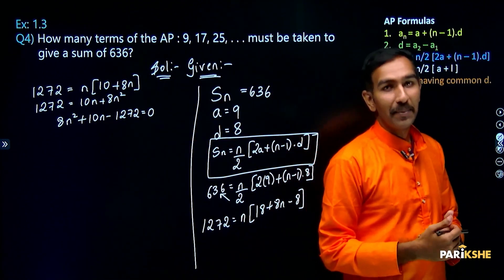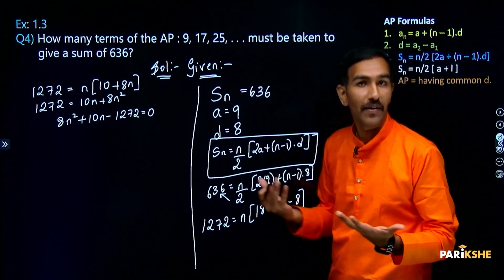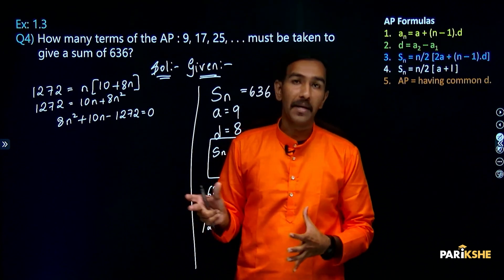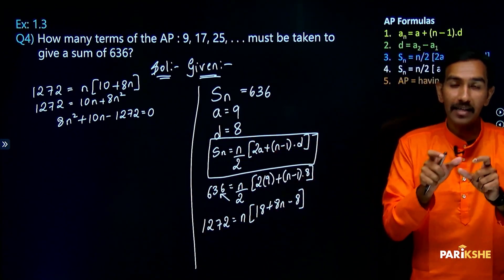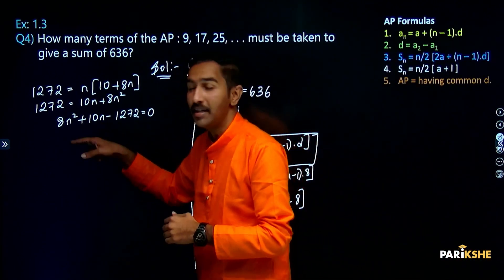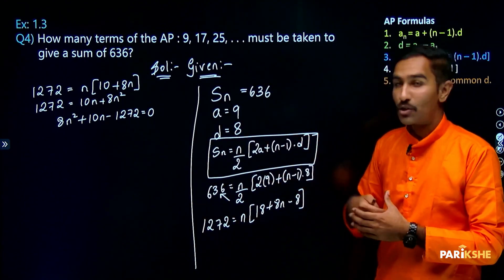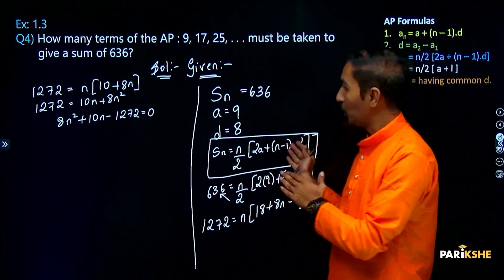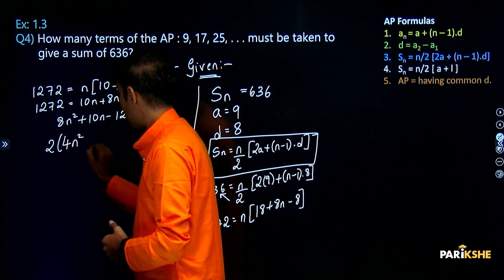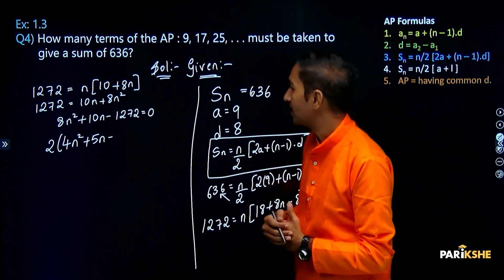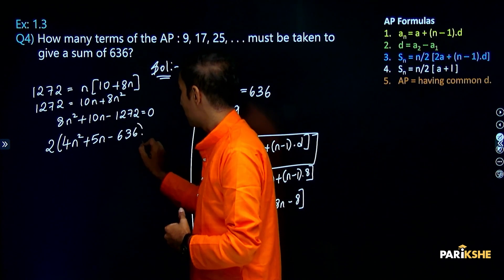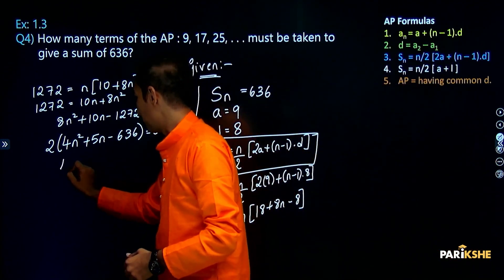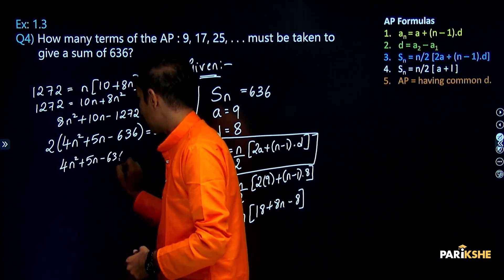Since a quadratic equation has formed, we need to do factorization. We can take 2 as common factor. Dividing by 2: 4n squared plus 5n minus 636 is equal to 0. Since 0 divided by 2 is 0, the equation becomes 4n squared plus 5n minus 636 is equal to 0.